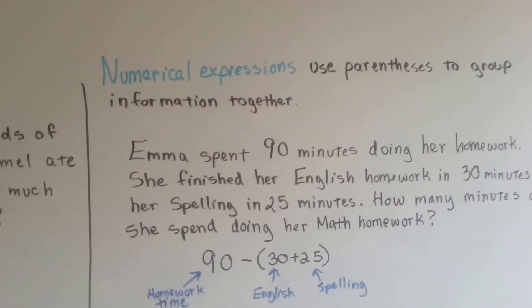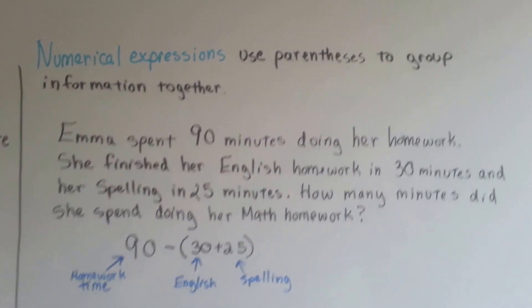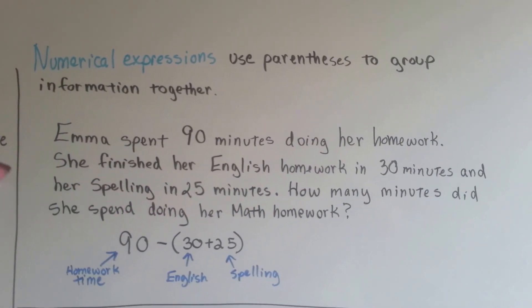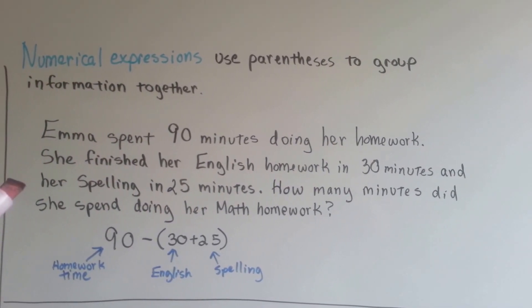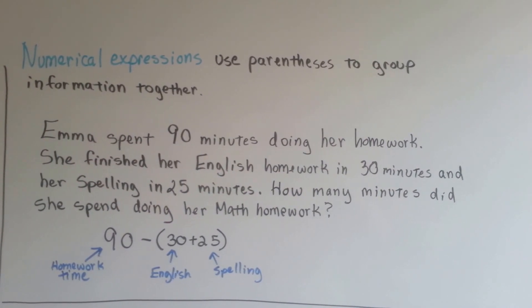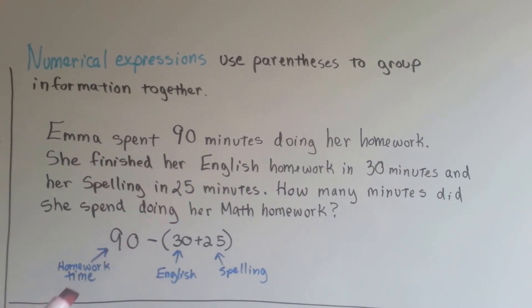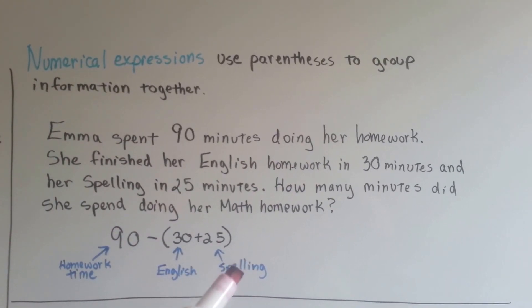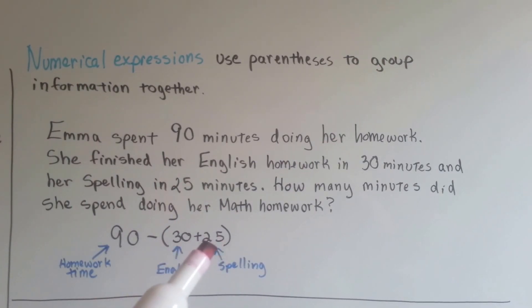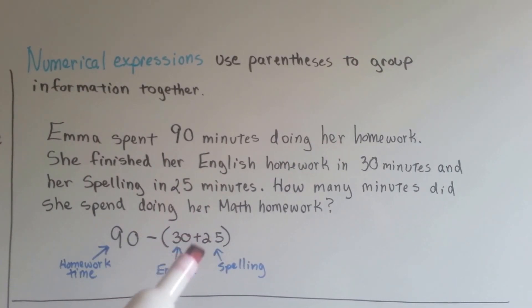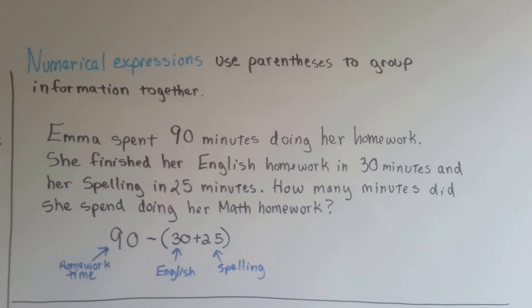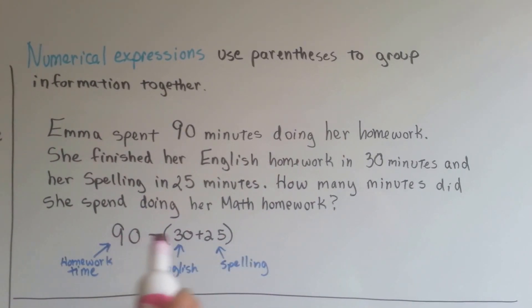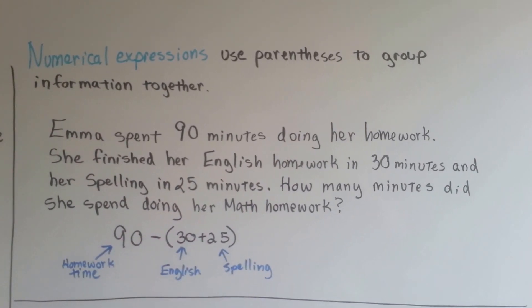A numerical expression can use parentheses to group information together. Emma spent 90 minutes doing her homework. She finished her English homework in 30 minutes and her spelling in 25 minutes. How many minutes did she spend doing her math homework? So the story we tell is there was 90 minutes of homework time. English was 30 minutes. Spelling was 25 minutes. And if we add these two together, we can get a total that we could subtract from the 90 to find out what the math homework time was. See? So it's not asking for an answer. It's just a numerical expression telling you the story.